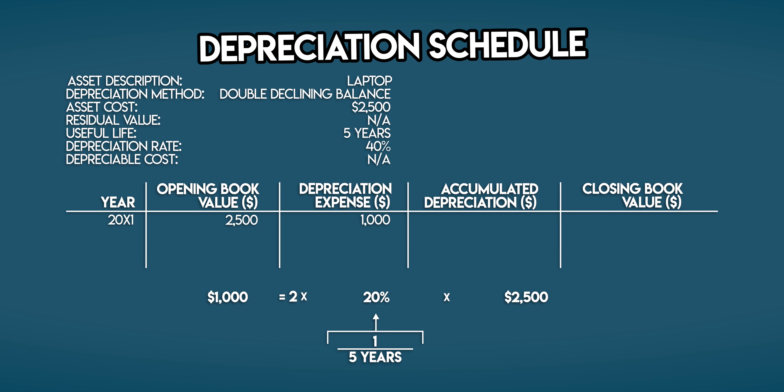Accumulated depreciation is the sum of all depreciation expenses incurred to date. In year 1, it matches your depreciation expense, so it's $1,000. Closing book value is the carrying amount of your laptop at the end of the year — this is the net asset amount that you hold in your balance sheet. It's your opening book value of $2,500 minus your depreciation expense of $1,000, so $1,500.